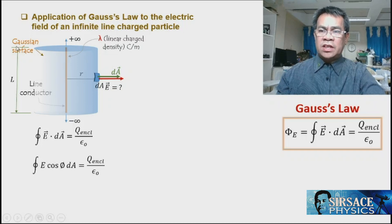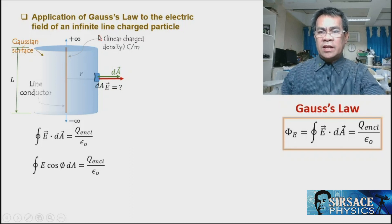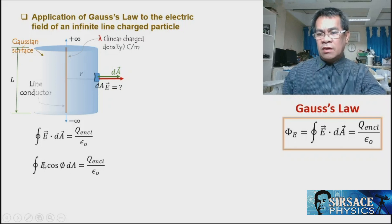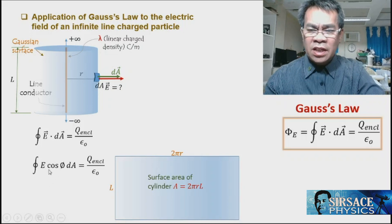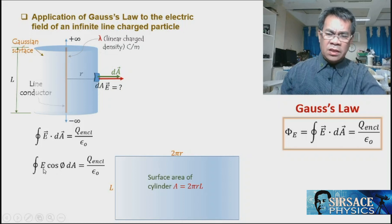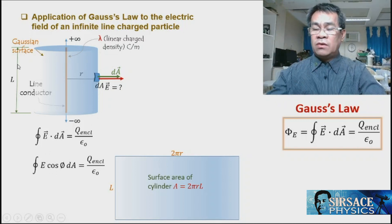We consider a length L of the charge. The enclosed charge equals the linear charge density λ times L (since λ = charge per length, λL gives the enclosed charge). Since θ = 0, cos(0) = 1, and E can be placed outside the integral. The limit of the integral over dA runs from zero to the lateral surface area of the cylinder.